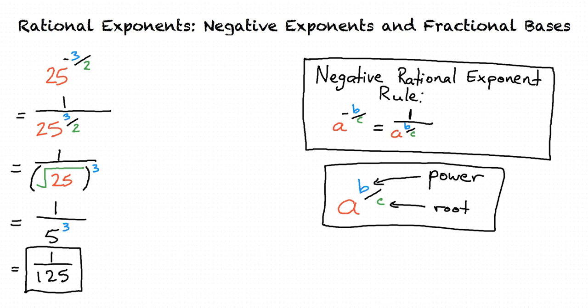Now we will look at an example with a fractional base raised to a rational exponent. Let's take a look at 1 over 81 raised to the 3 fourths power. By the power of a quotient rule, the exponent distributes into both the numerator and denominator. So this can be rewritten as 1 over 81 raised to the 3 fourths power.